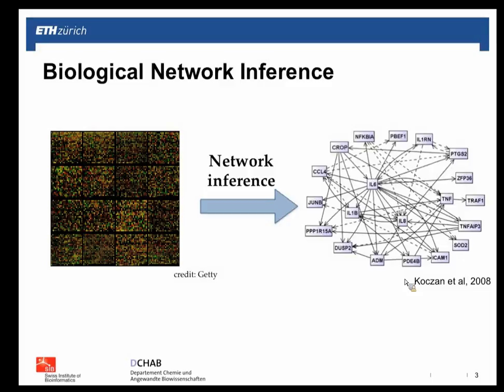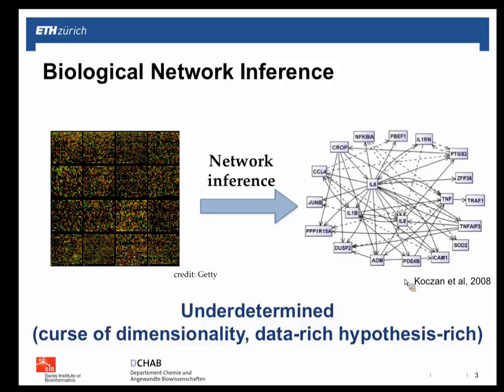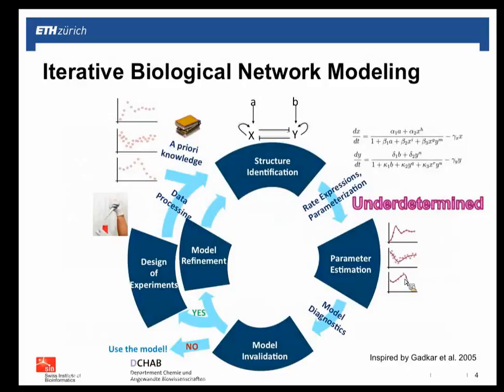There are two parallel research tracks in my lab. One is developing methods and tools to reverse-engineer models from data. The other is an application focused on the biology of aging, particularly mitochondrial DNA mutations. Today we'll focus on the first track: biological network inference. I don't need to motivate this problem much to this audience, since you've been working with omics data and extracting networks — an activity called network inference.